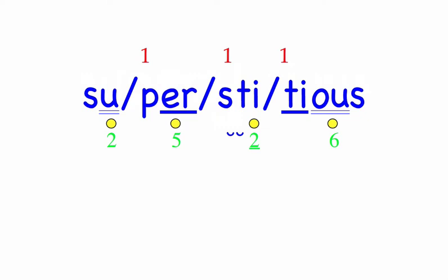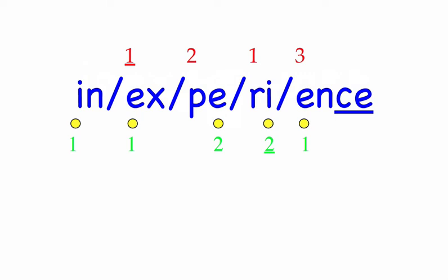Row six. Inexperience. Your inexperience is showing. Five syllables. First syllable: In, two sounds, I-N. Ex, two sounds, E-X. Pe, two sounds, P-E. Ri, two sounds, R-I. Ents, three sounds, E-N-S. Mark the word. Inexperience.